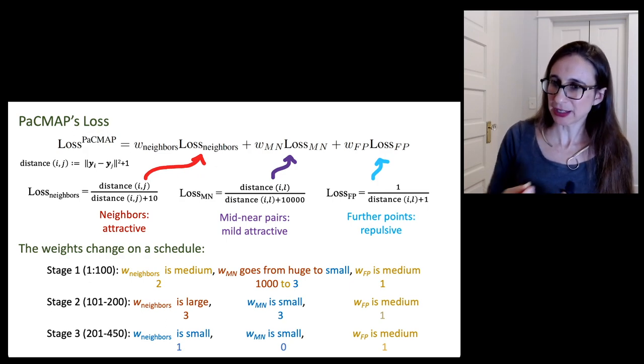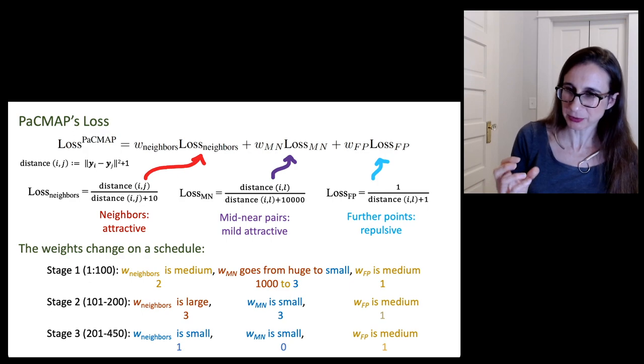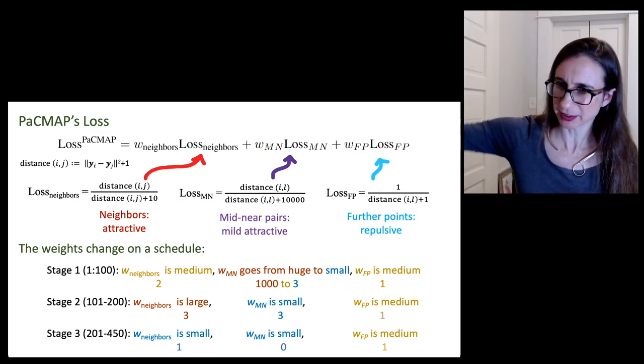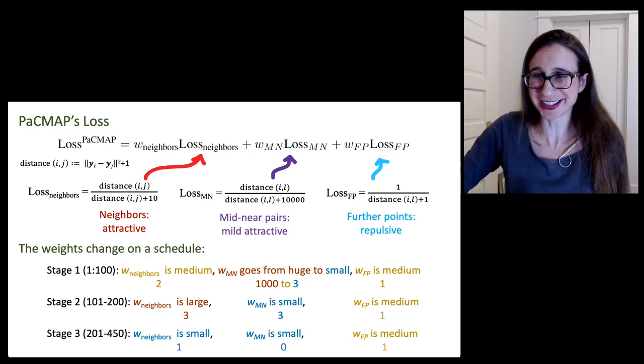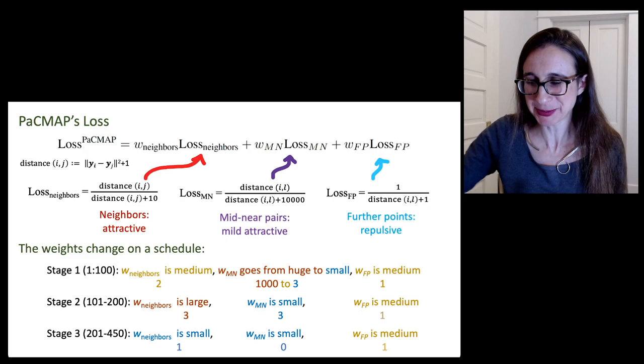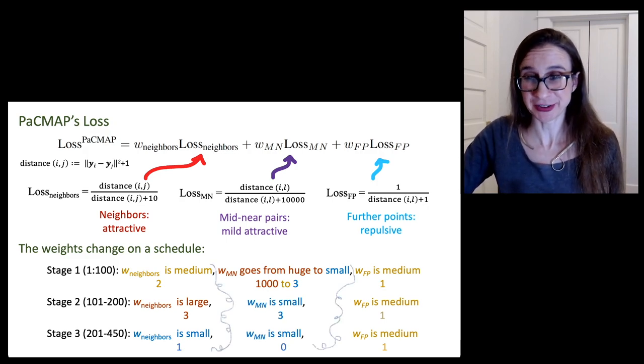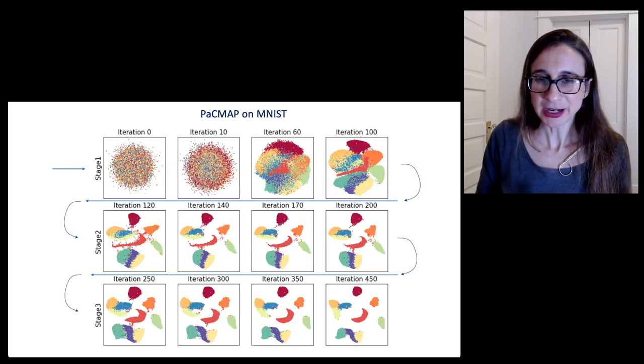And then in the third stage, it basically just kind of fine tunes what's going on that's close to me. So it really kind of just says, let's keep attracting our neighbors and keep repulsing the further points. And that's it. That's the whole thing. That's the whole algorithm. And it just uses the Adam optimizer. So it's very efficient. It's very computationally efficient too, which is a really nice thing about it.